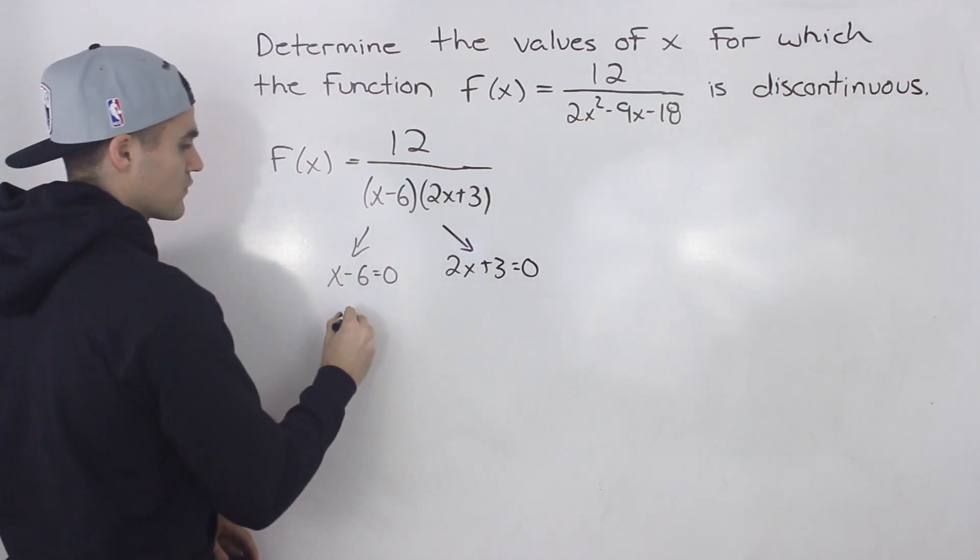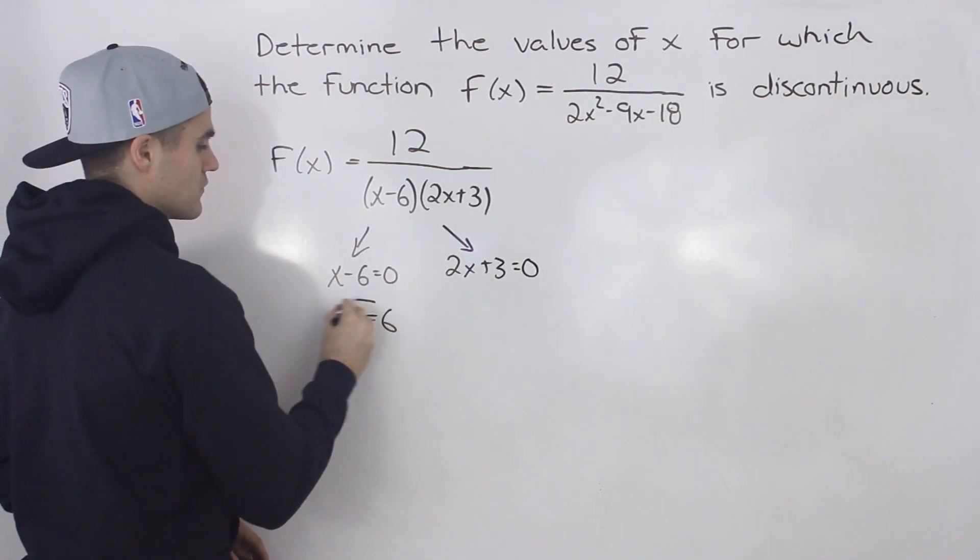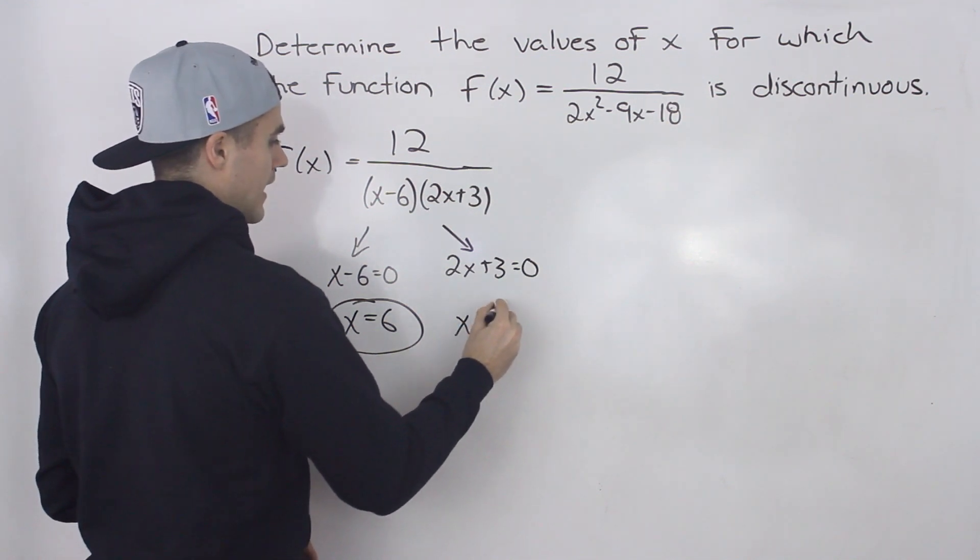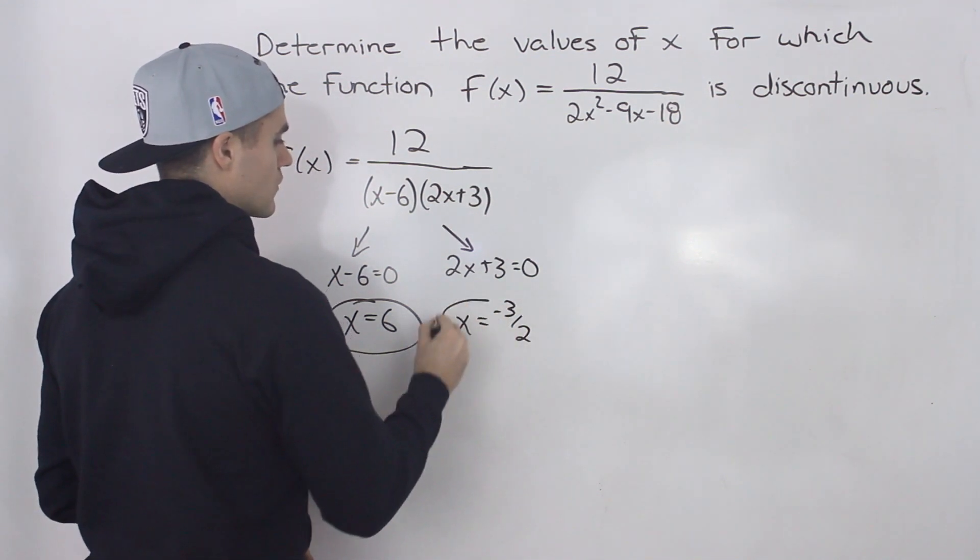we know that there's going to be a vertical asymptote there. So there's going to be a vertical asymptote at x = 6 and at x = -3/2.